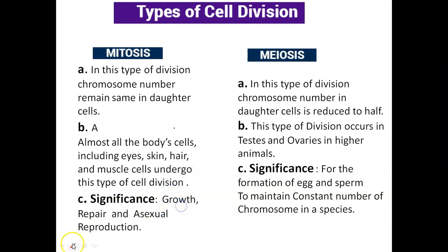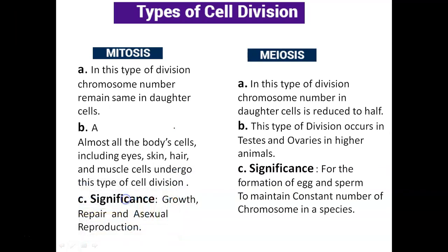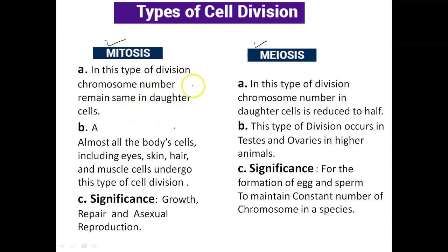Cell division is of two types. The first type is mitosis, and the second type is meiosis. We will see the definitions here and then the details of these two processes in the coming slides.